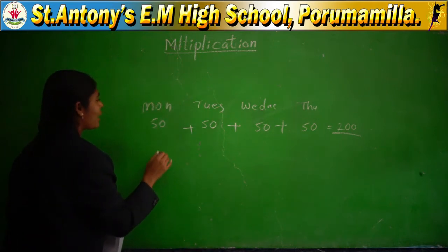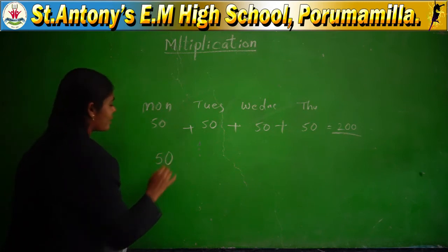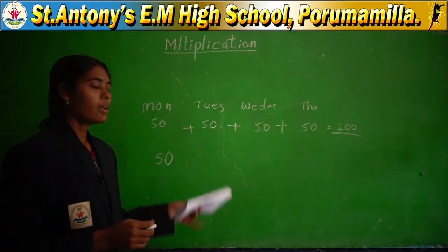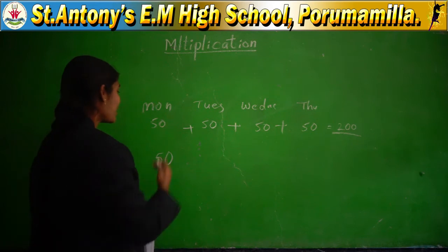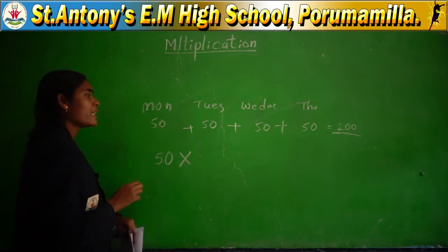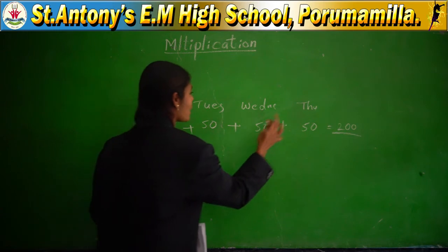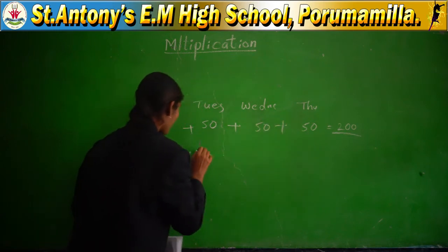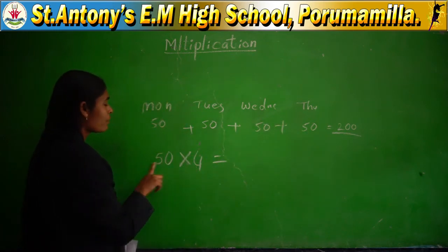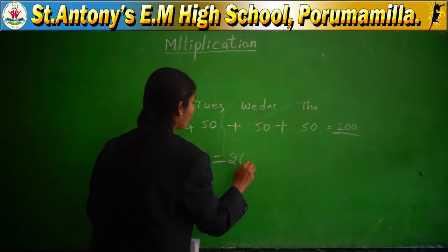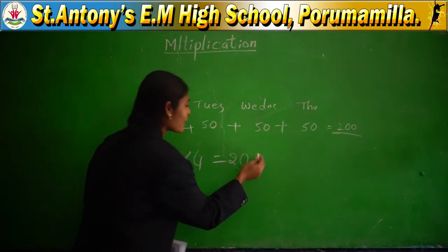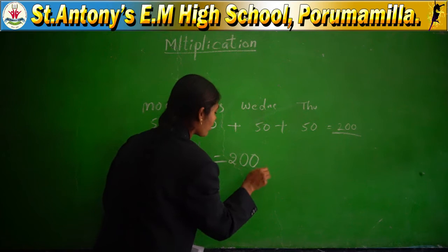First write down the number of chocolates — how many chocolates you are buying every day: 50 chocolates. Number of chocolates you are buying, multiplied by how many days you brought: 1, 2, 3, 4. 5 fours are — 4 fives are 20. How many zeros are there? One zero. You can add directly one zero. Totally 200.